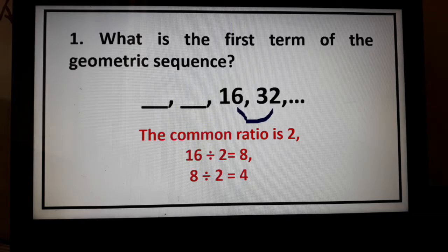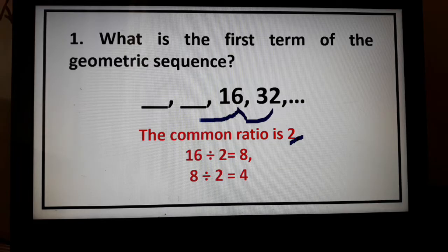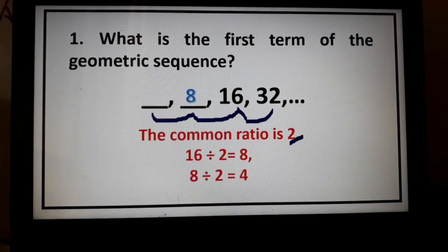Using the common ratio of 2, we repeatedly divide to get the value of our first term. So, 16 divided by 2 will give us 8. And then, 8 divided by 2 will give us 4.